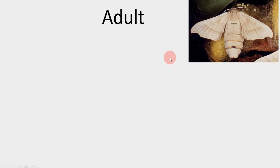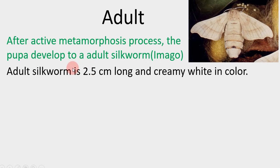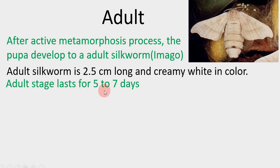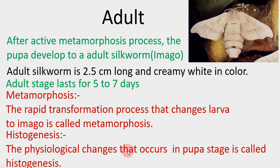After the metamorphosis process, the pupa develops into an adult silk moth, which is called imago. The adult silk moth is 2.5 cm long and creamy white in color. The adult stage lasts for 5 to 7 days. Metamorphosis is the rapid transformation process that changes larva to imago. Histogenesis is the physiological change that occurs in the pupa stage.